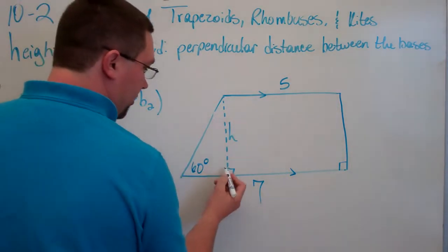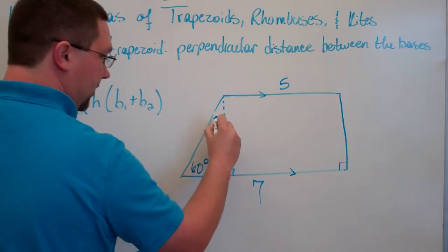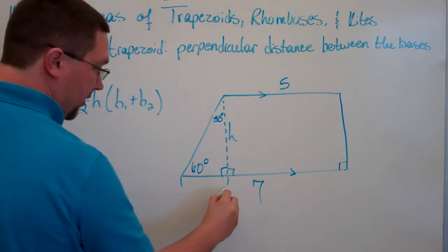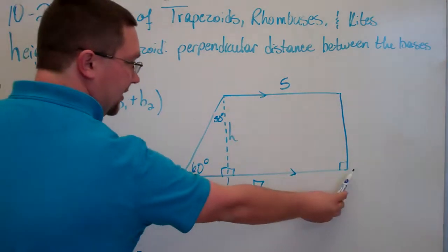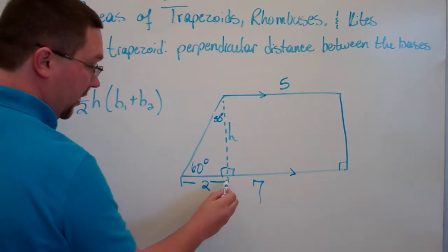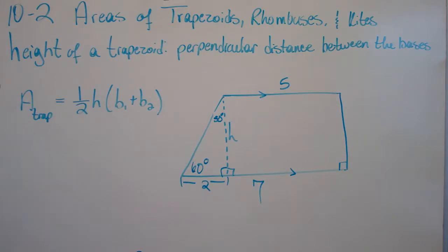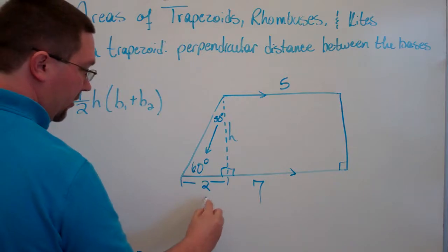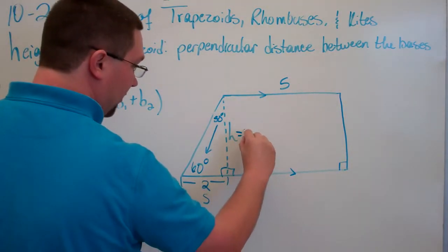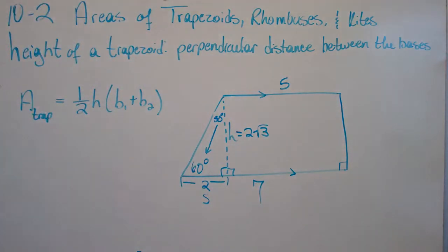We know this is a 30-60-90 triangle because we know this is a right angle. Since this angle is 60, this one has to be 30. We know from here to here is 2 because these lines are parallel and since this is a right angle, from here to here is 5, making this side 2. Since 2 is across from the 30-degree angle, it's s in the ratio, and across from the 60-degree angle is s times the square root of 3. So our height is 2 times the square root of 3.